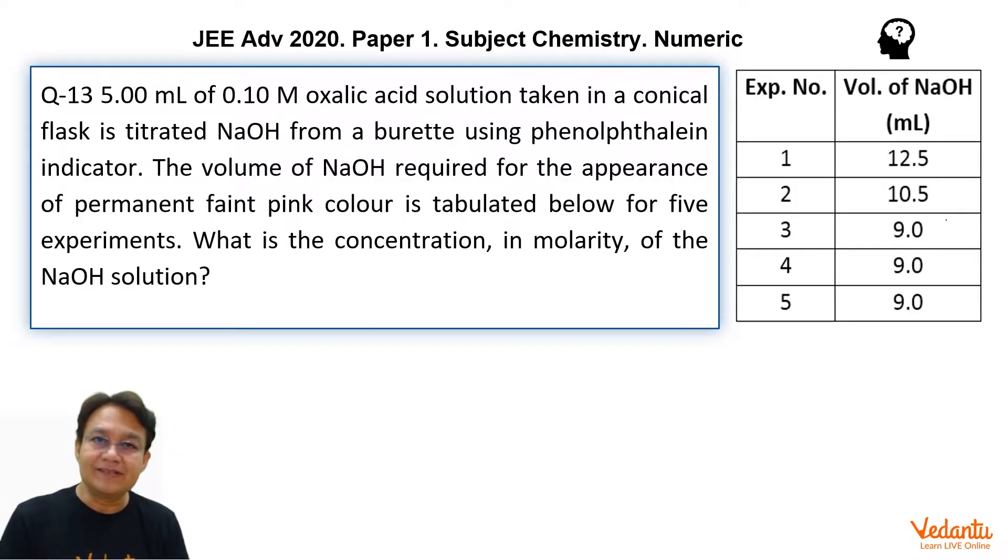The problem is a simple acid-base titration. In this problem, 5 ml of 0.1 M oxalic acid solution was taken in a conical flask and was titrated with NaOH from a burette using phenolphthalein as indicator. You know that at the end point the phenolphthalein will become pinkish, pink pen colour, and you will start the titration.